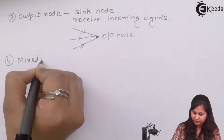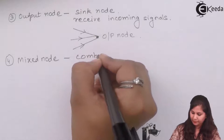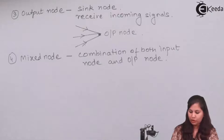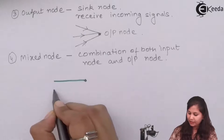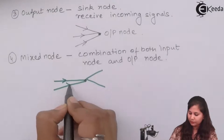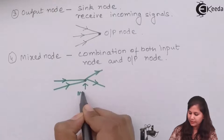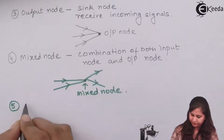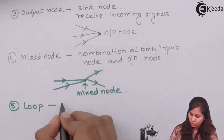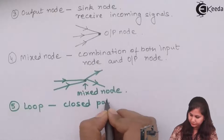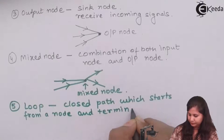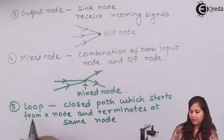Then we have the mixed node. The mixed node is a combination of both input node and output node. It is a node that has both incoming branches and outgoing branches.